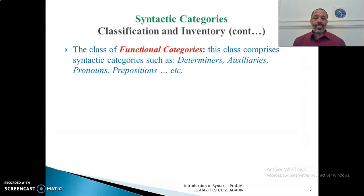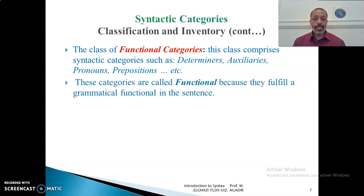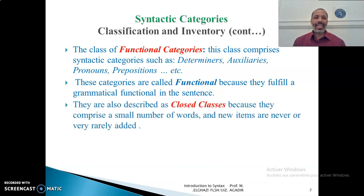The second class is called functional categories. This class comprises syntactic categories such as determinants (which means articles), auxiliaries, pronouns, prepositions, negative markers, and so on. These categories are called functional because they fulfill a grammatical function in the sentence — they have primarily a grammatical function, especially linking between the parts of a sentence. They are also described as a closed class because they comprise a small number of words and new items are never or very rarely added. You never hear, for example, that a new preposition or a new auxiliary is added in English — those we've known for many years still persist.